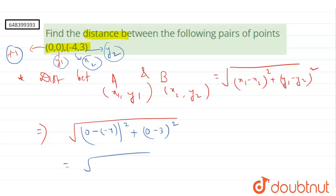And this will be 4 square plus minus 3 square. And it will be under root of 16 plus 9 under root of 25. And that is 5. And that is our answer.